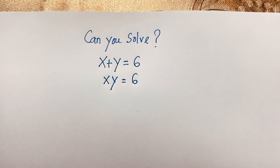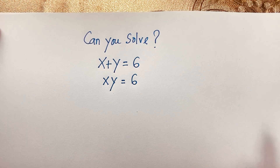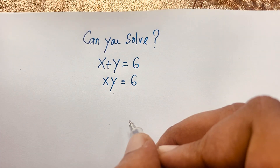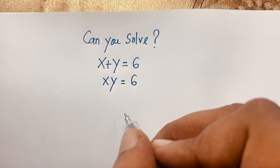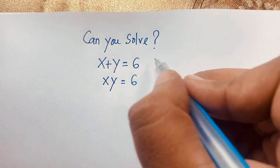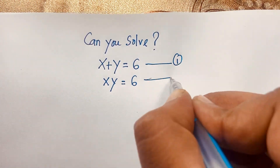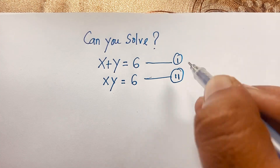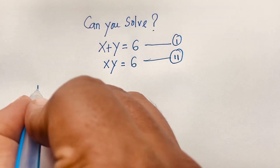Hello everyone. In this video we solve a math olympiad question. The question is: x plus y is equal to 6, and xy is equal to 6. We have to find out what x and y are equal to. Let's start. This is our first equation and this is our second equation.